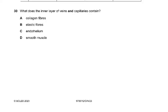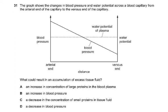Question number 30: what does the inner layer of veins and capillaries contain? The answer is the endothelium — nothing else. The inner layer is the endothelium, which is the flattened layer of cells present in all vessels: arteries, veins, and capillaries. In capillaries, in fact, that's the only thing present.